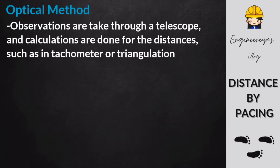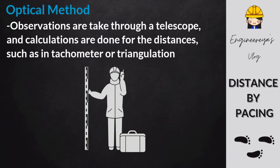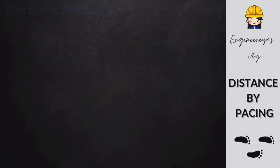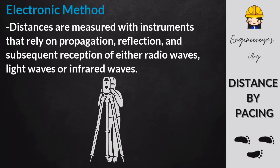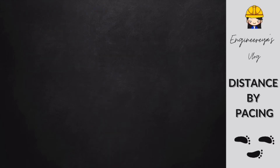In the optical method, observations are taken through a telescope and calculations are done for the distances, such as in tachometer or triangulation. Tachometry, or stadia, is the common term in the USA — it's a surveying method utilized to quickly determine the horizontal distance to and elevation of a point. In the electromagnetic method, distances are measured with instruments that rely on propagation, reflection, and subsequent reception of either radio waves, light waves, or infrared waves. The main instrument for surveyors on site today is the total station, which combines angle measurements obtained with a traditional theodolite with electronic distance measurements.